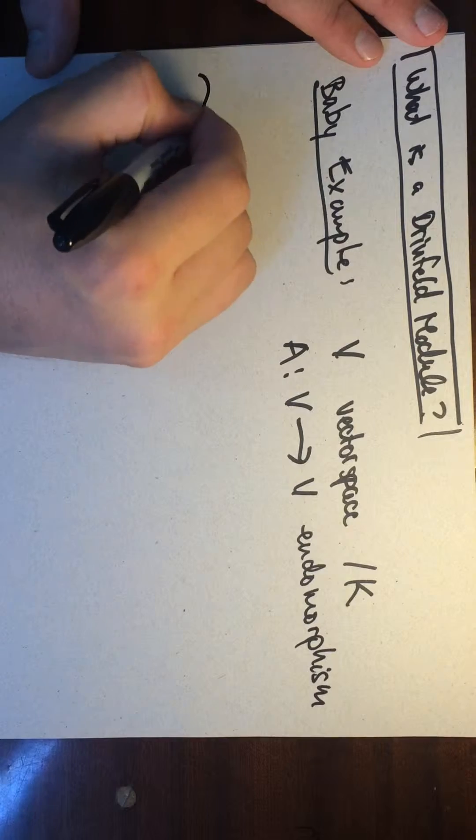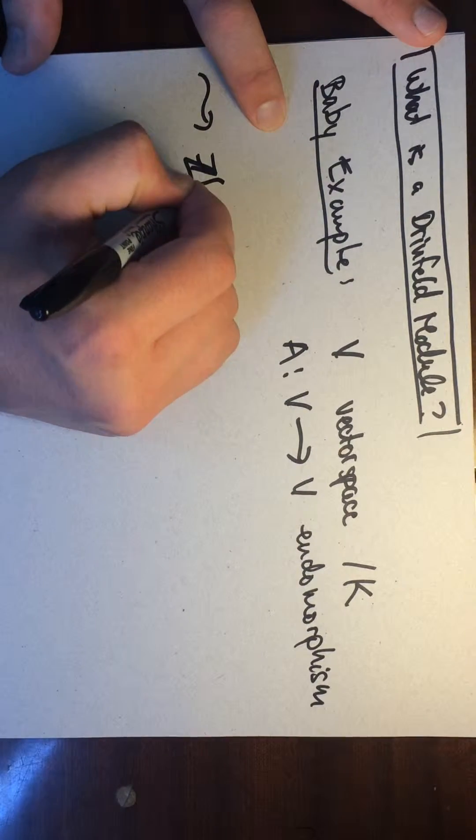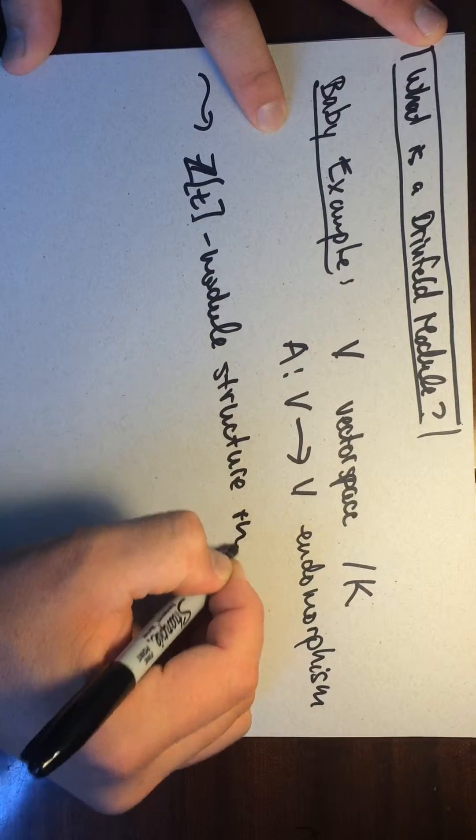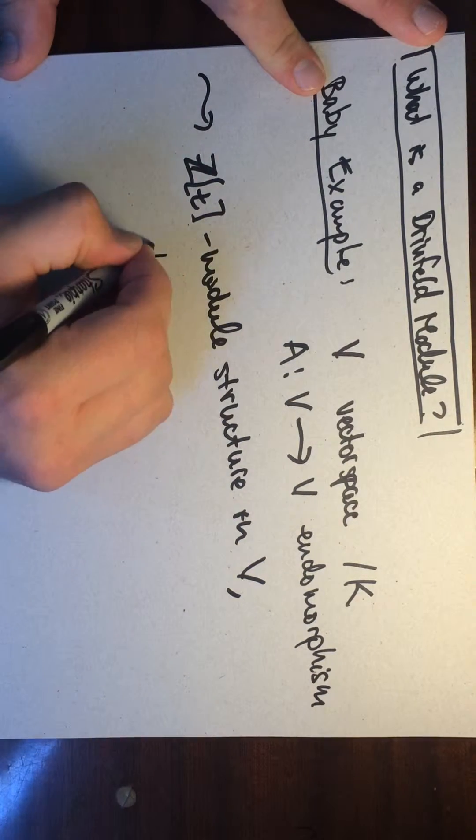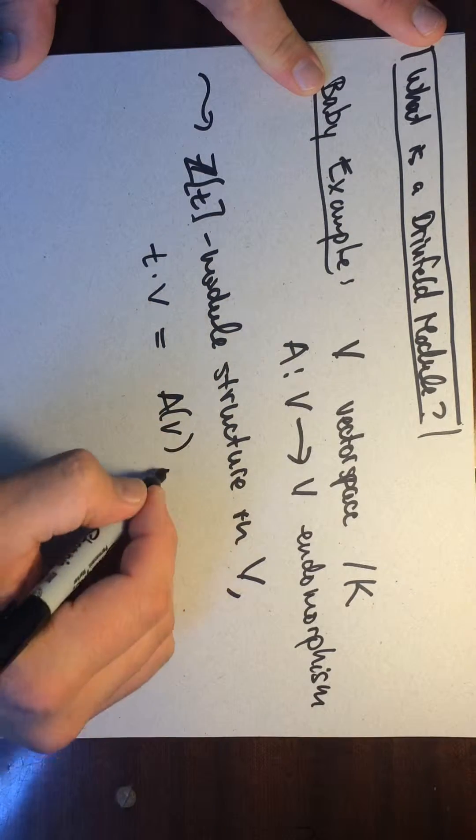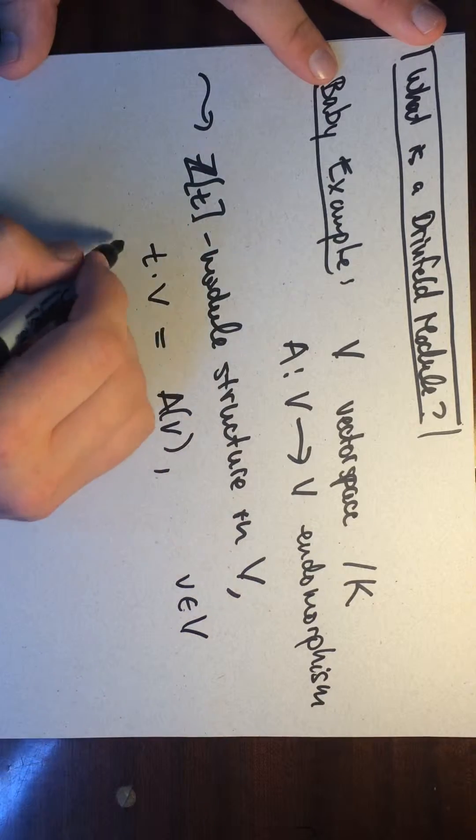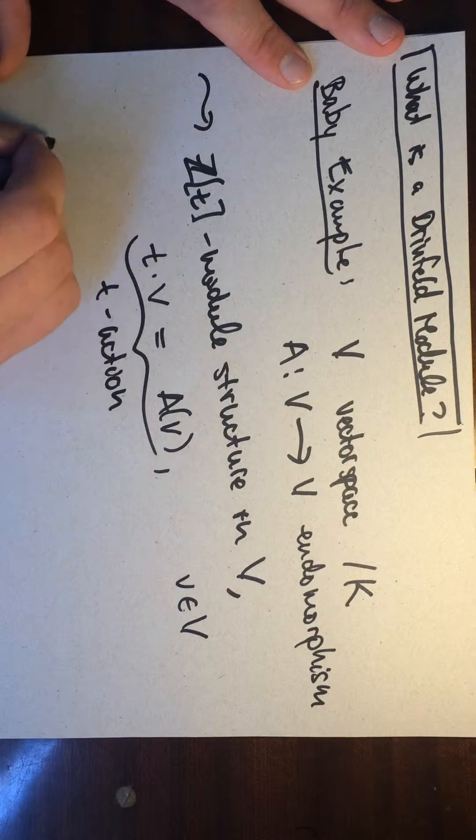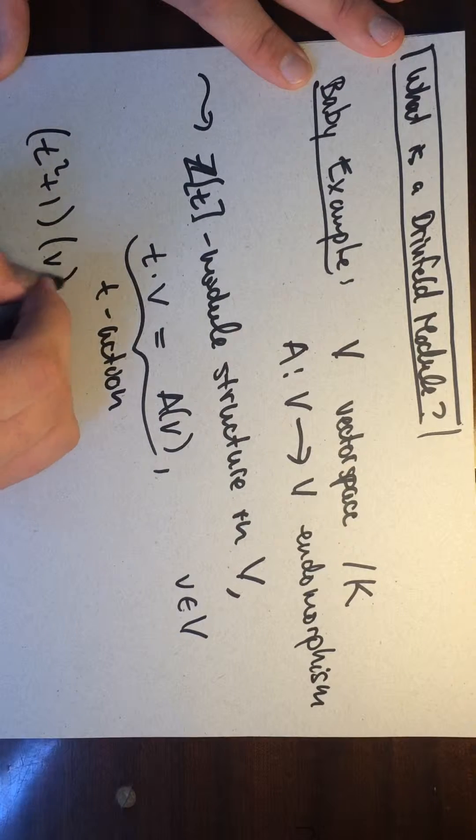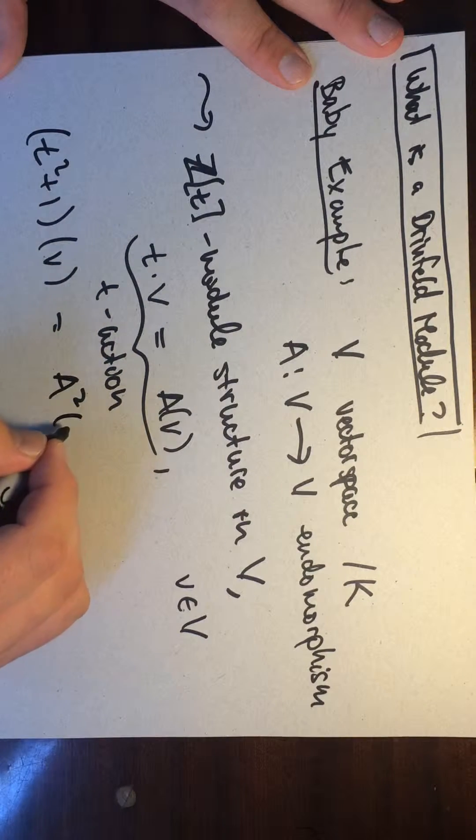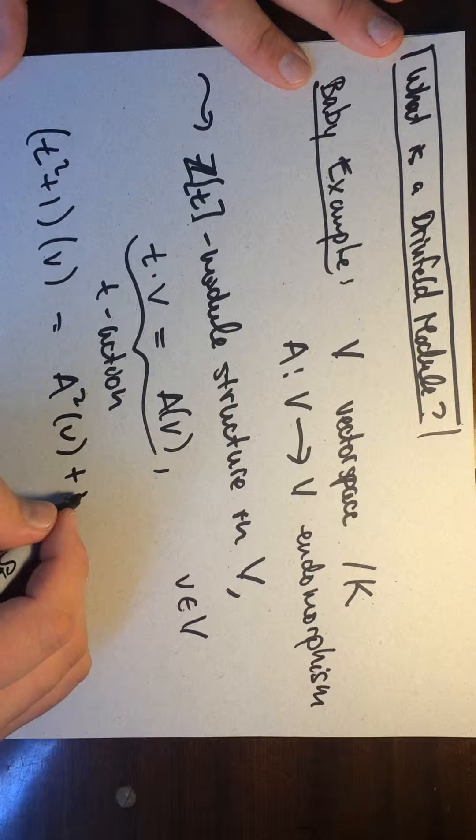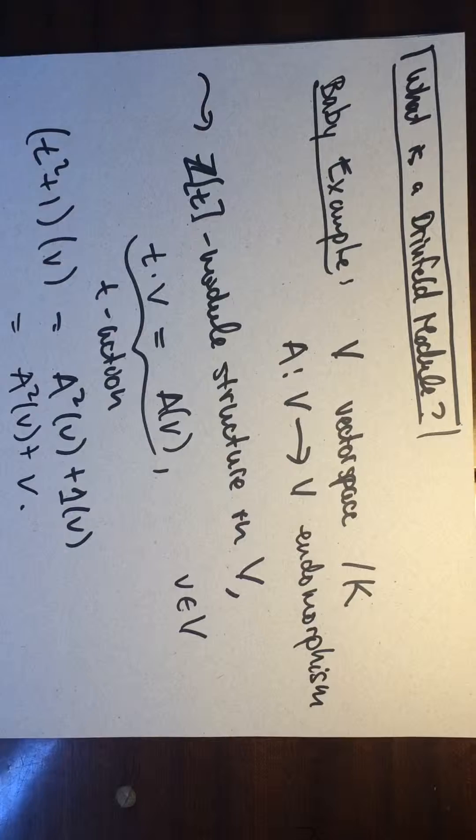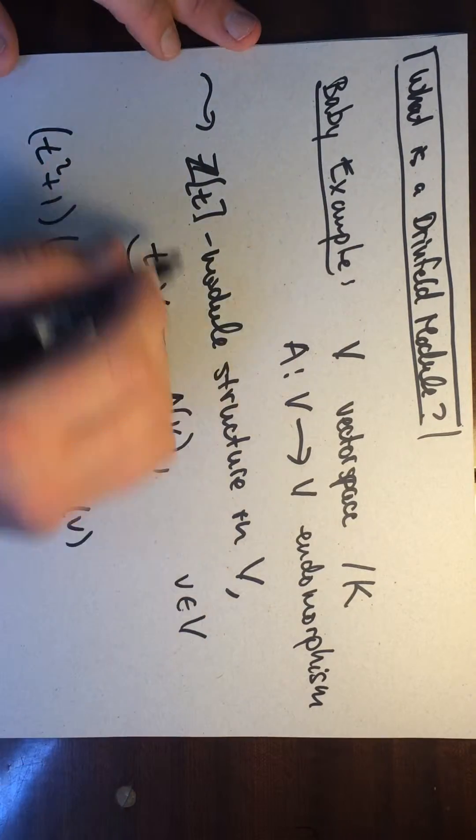And then what we'll do is we're going to construct a Z[T] module structure on V. And what we're going to do is we're going to take T, and if we wanted to act on some V, we just apply A to V. So this is the T action. And more generally, we're going to take some polynomial. So if we did T squared plus one, and we wanted to apply it to V, well, we'll just apply the matrix here. A squared, we'll apply it to V plus one. So this is the identity times V. So this is just going to be A squared V plus V. Okay, so we applied the endomorphism twice. So this makes V into a Z[T] module.